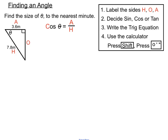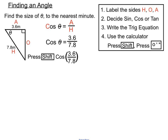We write the cos ratio at the top and fill in our numbers. We don't know θ yet, so we write cos θ. In the adjacent position we have 3.6, so that goes on top. The hypotenuse is 7.8, so we put that there. Then we press Shift Cos, enter 3.6 over 7.8, press equals to lock it in, then press the degrees, minutes, and seconds button. You should get 62 degrees, 30 minutes, and 48.87 seconds.